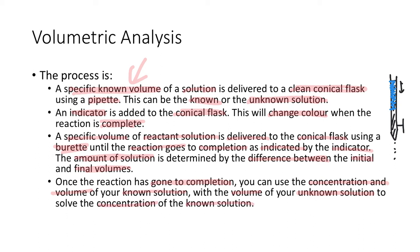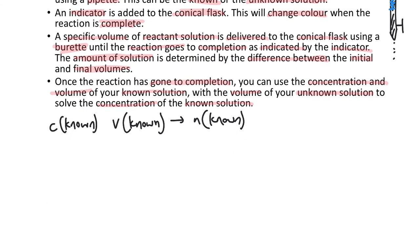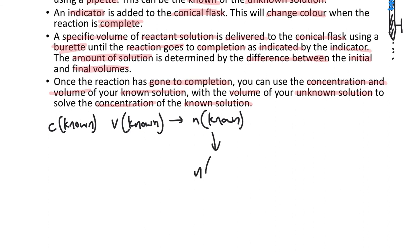Effectively, you have the concentration known and you have the volume of your known, which leads to the number of moles of your known, which leads you, with a balanced equation, to the number of moles of your unknown. If you have the number of moles of your unknown, then in conjunction with the volume of your unknown, you can work out the concentration of that unknown. And that's the idea behind titrations.